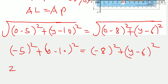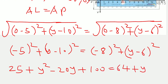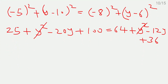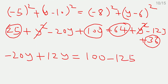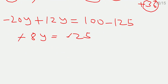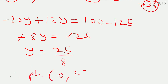Squaring both sides: 25 plus y² minus 20y plus 100 equals 64 plus y² minus 12y plus 36. The y² terms cancel. So 25 minus 20y plus 100 equals 100 minus 12y. Rearranging: minus 20y plus 12y equals 100 minus 125, giving minus 8y equals minus 25. Therefore y equals 25 by 8. The point on the y-axis is (0, 25/8).